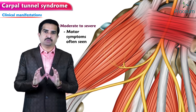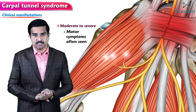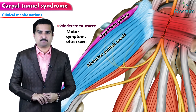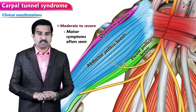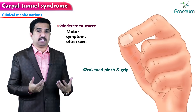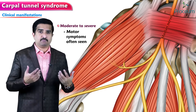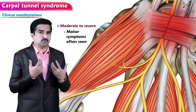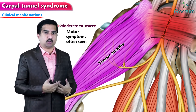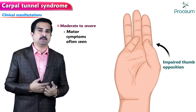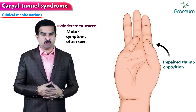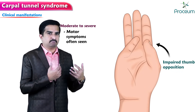In moderate to severe injury, motor symptoms are mainly due to involvement of the motor fibers of the median nerve innervating the thenar muscles — specifically abductor pollicis brevis, opponens pollicis, and the superficial head of flexor pollicis brevis. This results in weakened pinch and grip, and patients often complain of dropping objects. In rare, very severe cases, thenar atrophy with flattening of the muscles and impaired thumb opposition may be seen.